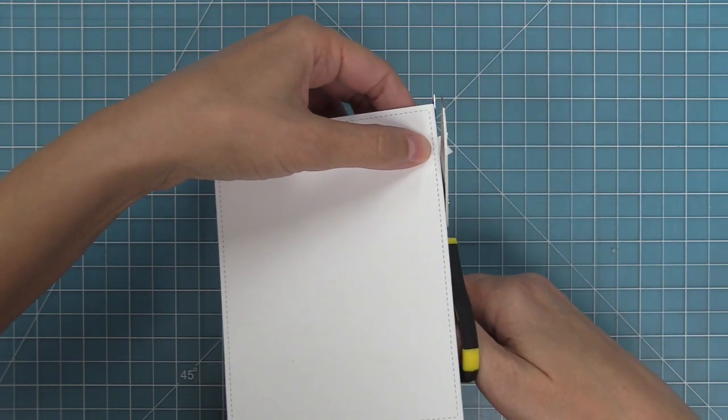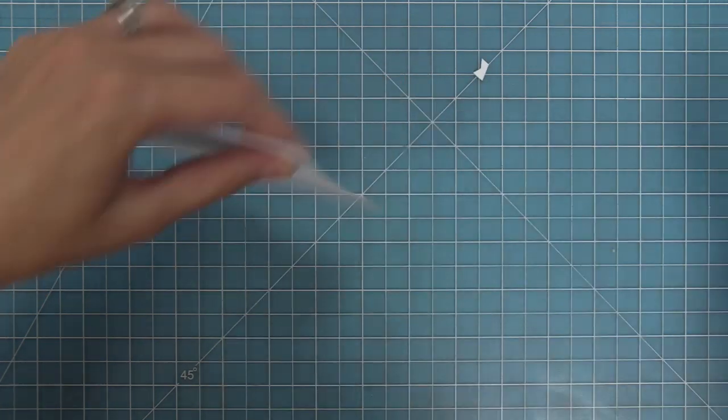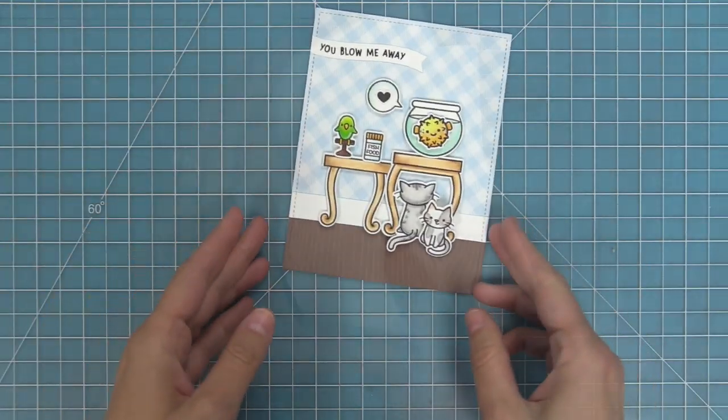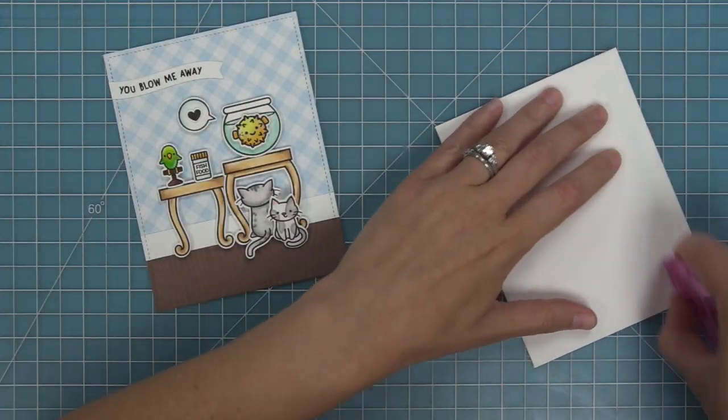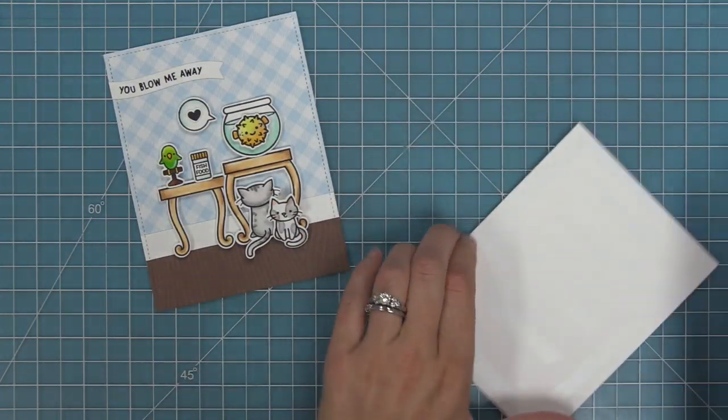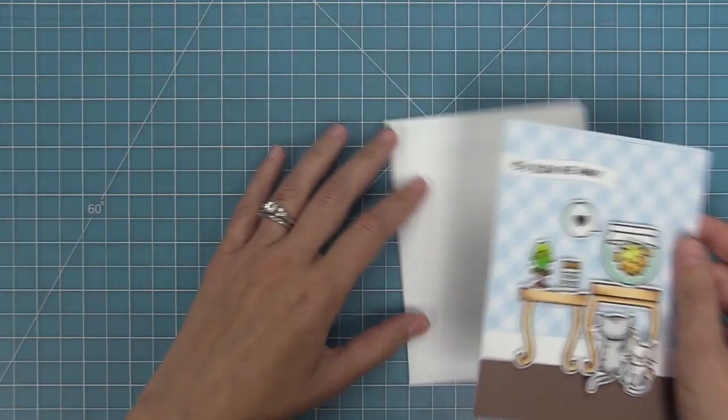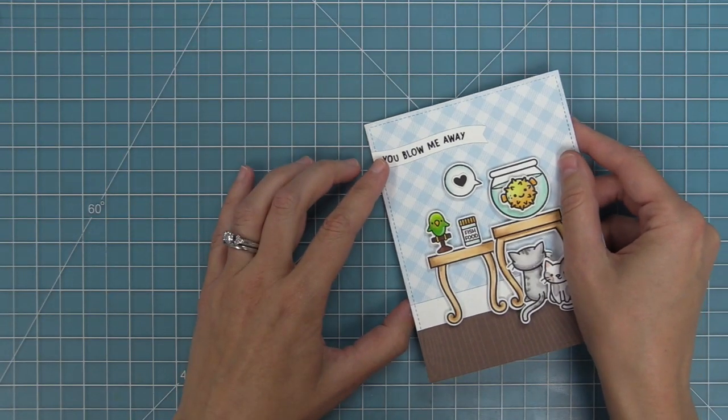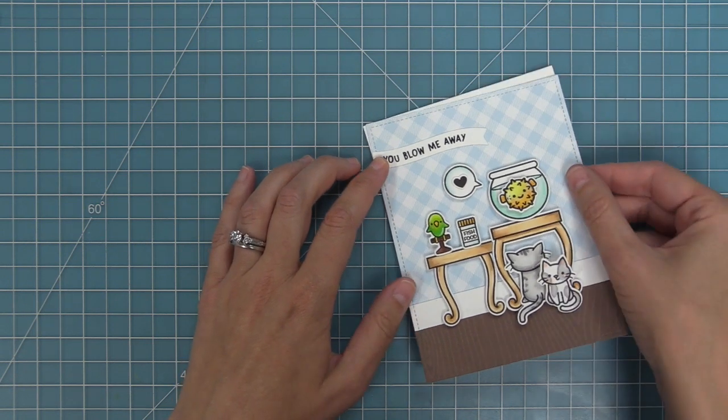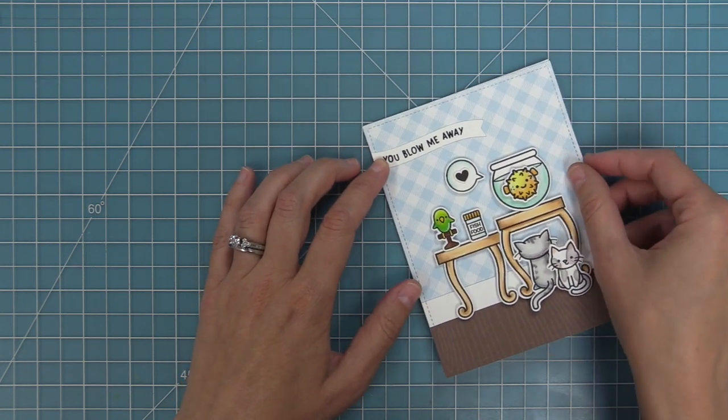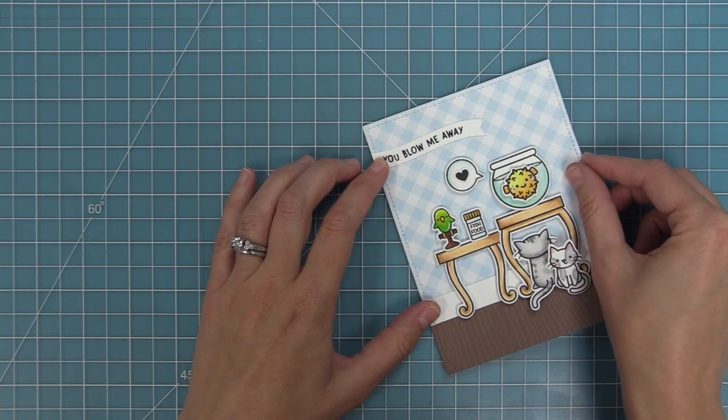After that all we need to do is create a standard size card base which is going to be five and a half by four and a quarter. Then I'm just going to add some tape runner to that card base and we can layer our card front right on top. This card is just so absolutely adorable—it cracks me up with the fun pun and the cats looking up at the puffer fish. This would make someone's day. I can't wait to send this to someone.